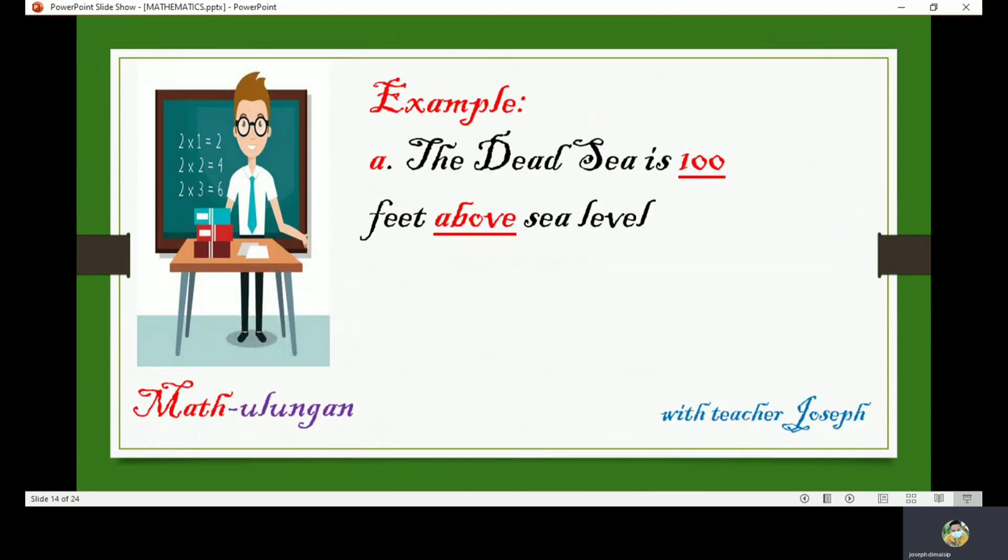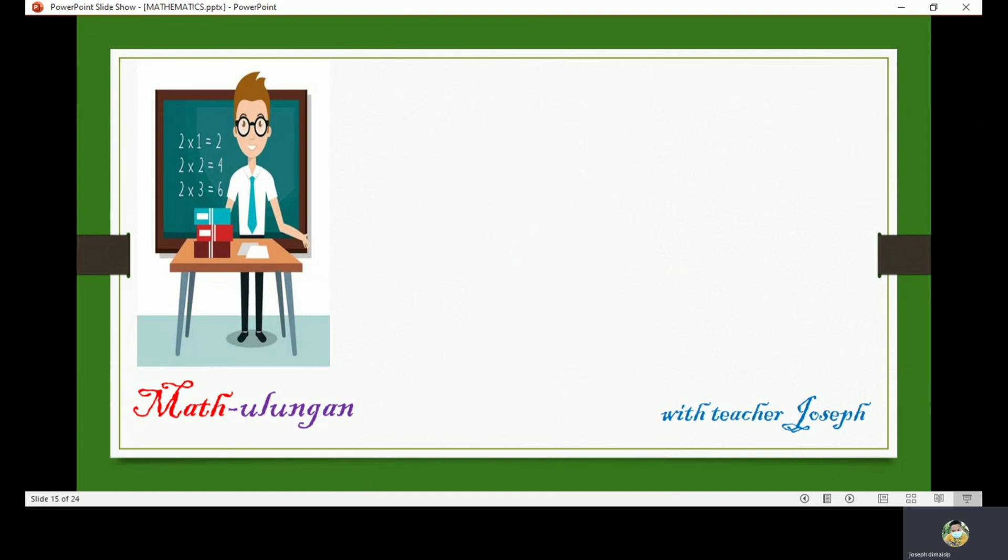The Dead Sea is 100 feet above sea level. The word 'above' represents a positive number, and the additive inverse of above is below. In symbol, we can write it positive 100 or 100. Hope you learned from today's lesson.